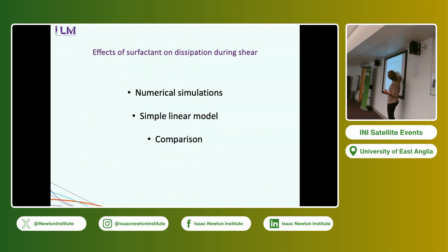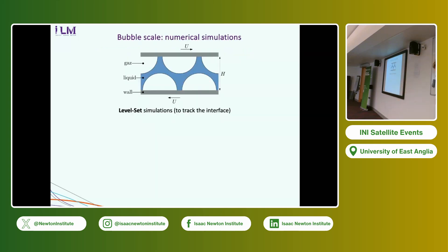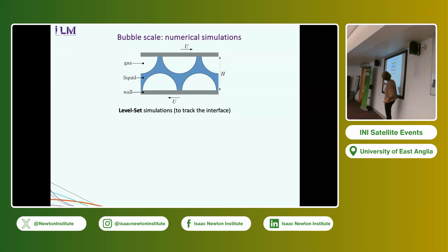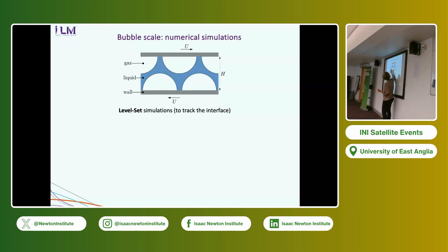I will show numerical simulations and a simple linear model, and make comparisons between both. The numerical simulation is a level-set simulation — a code designed by Peter Spelt — to track the interface. We consider a wet foam geometry: a spherical hemispherical bubble pinned to two plates, and we apply shear between these plates. We need a wet foam because if the film is too thin we get numerical coalescence, as we have no repulsion forces between the interfaces.